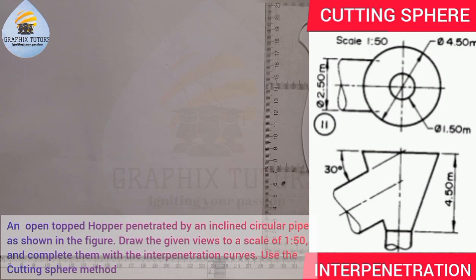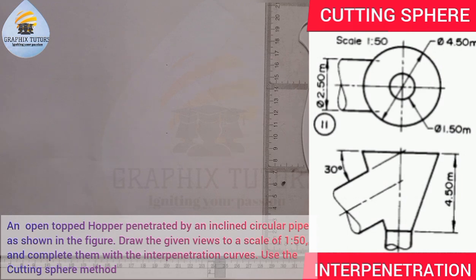First of all, we have to reproduce the figure shown on the right-hand side of the screen. If you look at the dimensions of this figure, you realize that they are all in meters instead of the regular millimeters we are usually used to in drawing. So the first thing you have to do is convert each meter to millimeters, then put them to scale because we are told 1:50, which is a reduction.